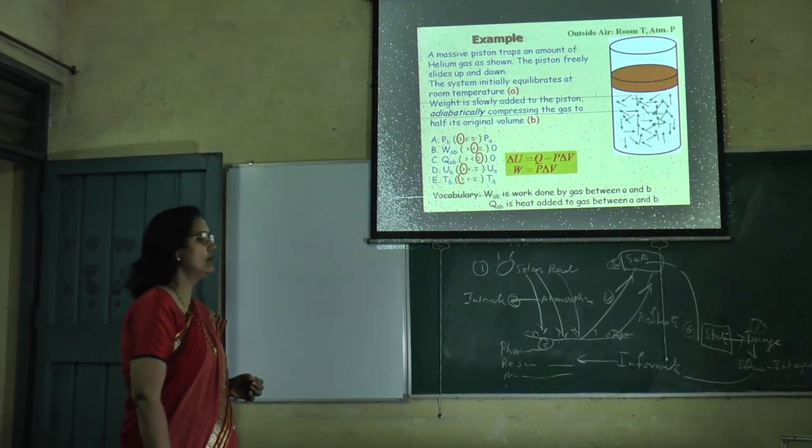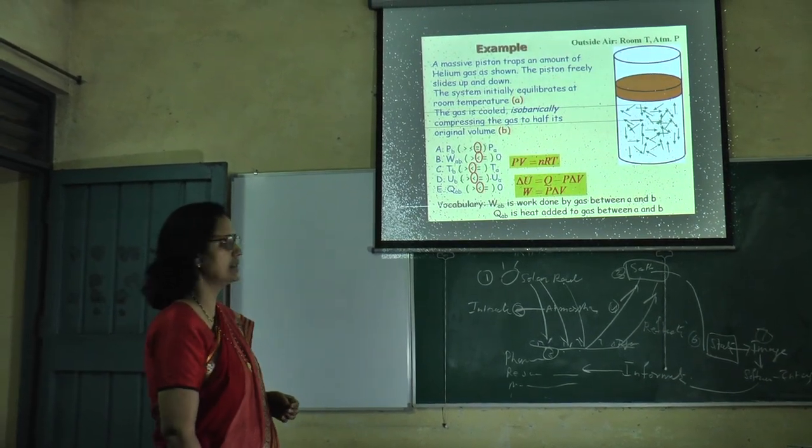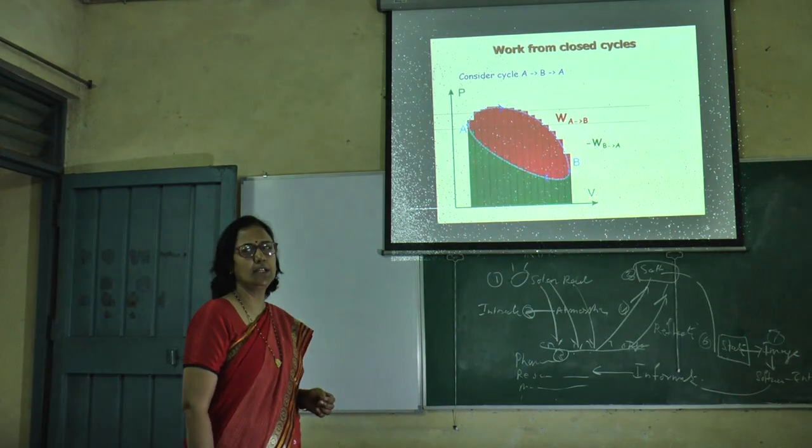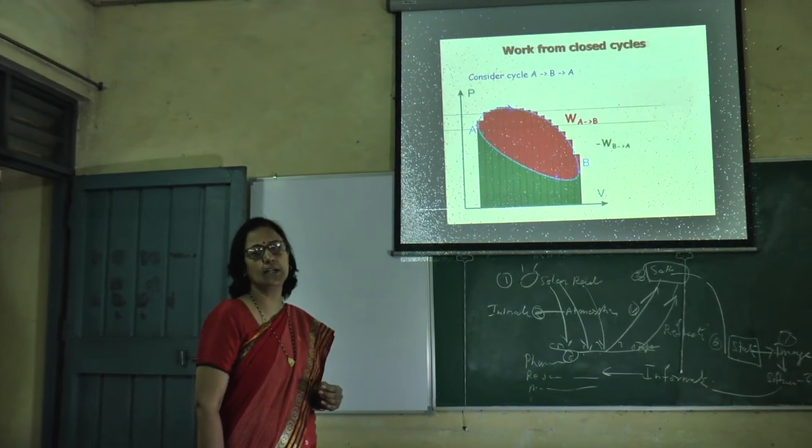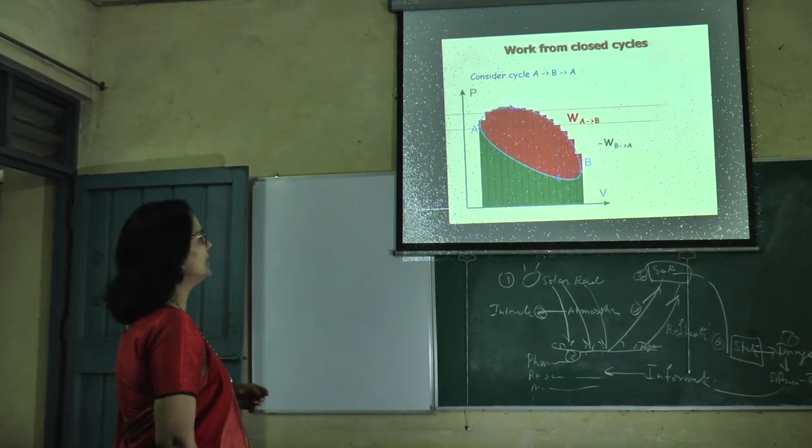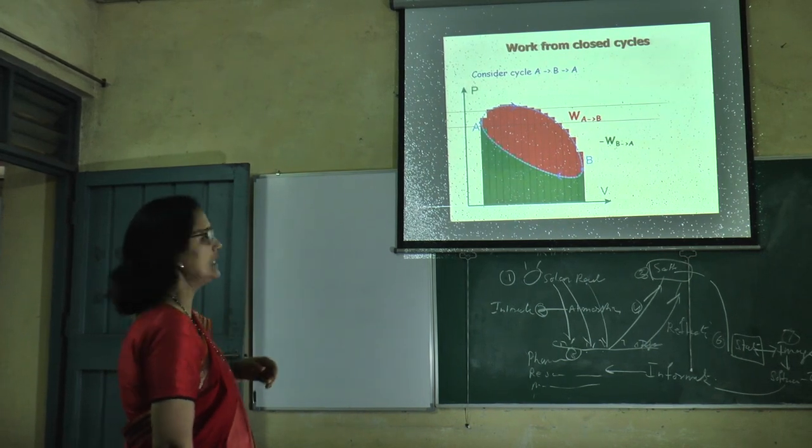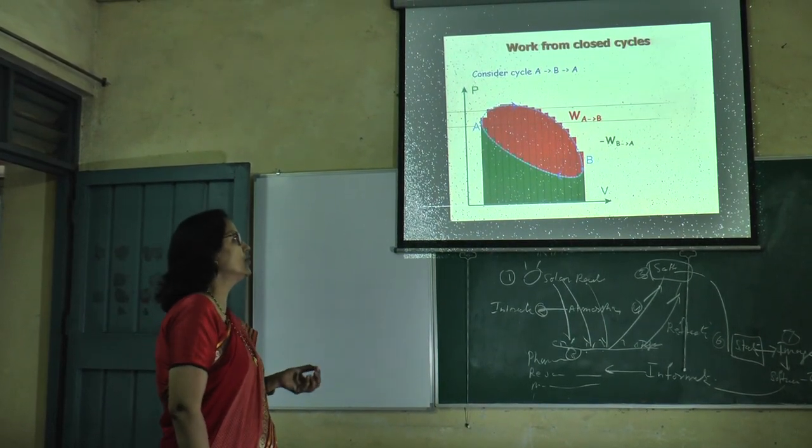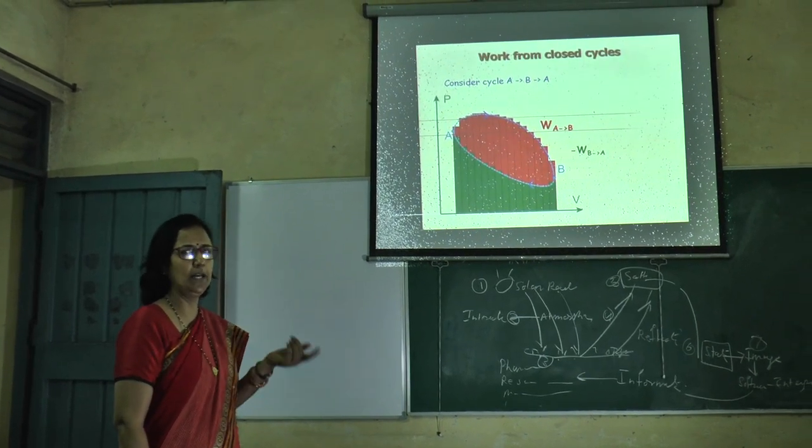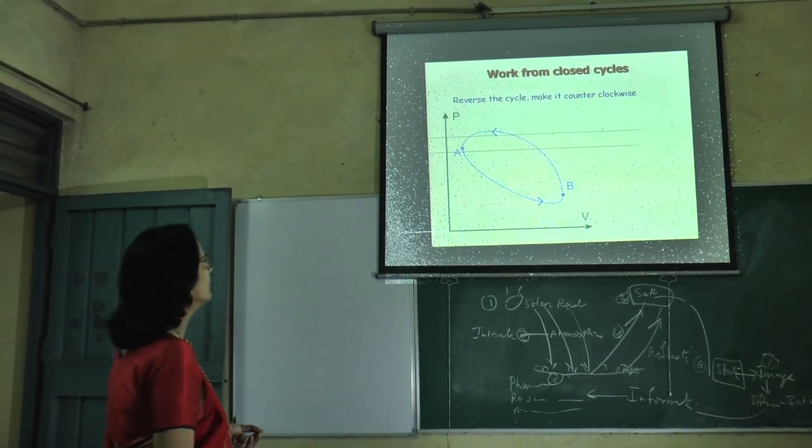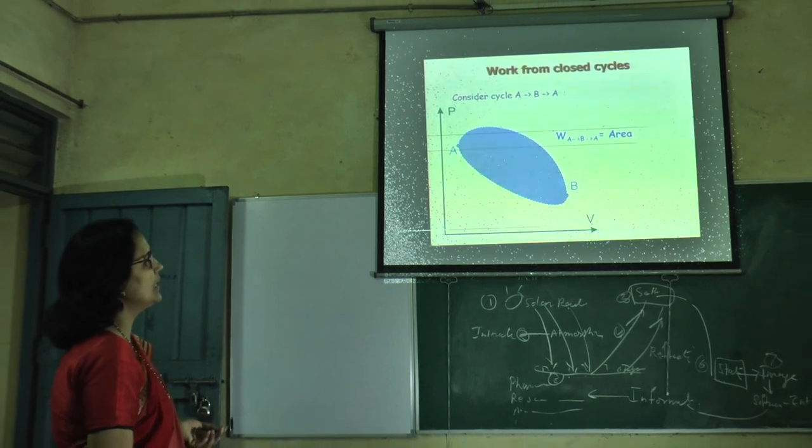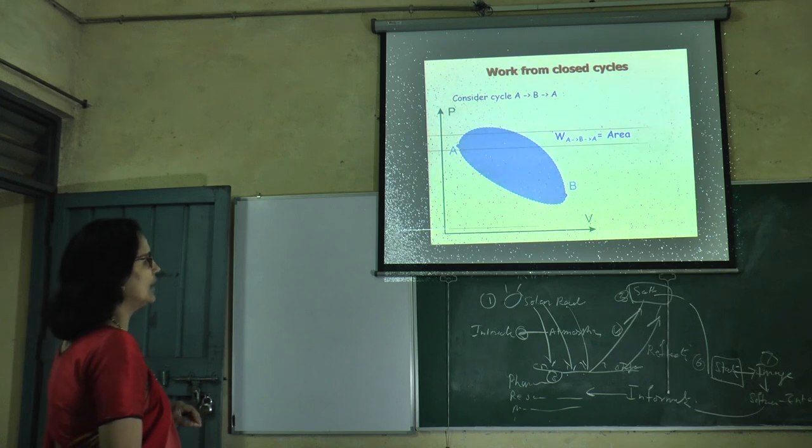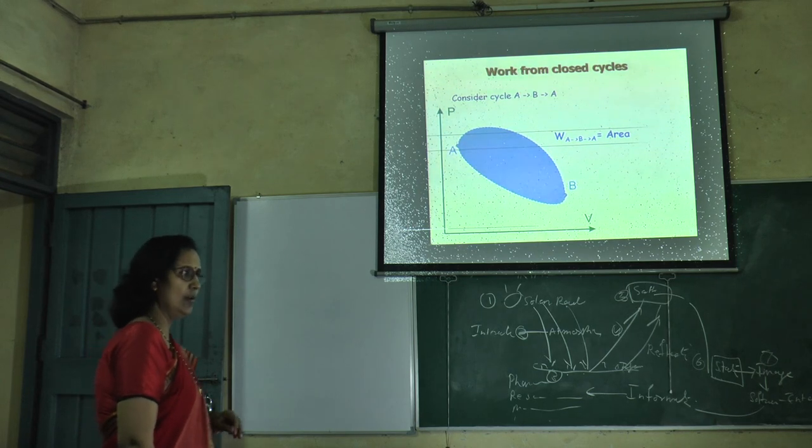By this example, we also calculate change in internal energy and work done by the system or on the system. Work done for cyclic process is given. In a closed system, no matter exchange, only energy exchange. Pressure and volume graph is hyperbolic as we have seen previously. Here, the red portion is shown as work done from process A to B. The reverse process is also shown for conversion from B to A. This is the reverse cycle. In cyclic process, area under cyclic process is calculated, and then we know valuable information about thermodynamics.